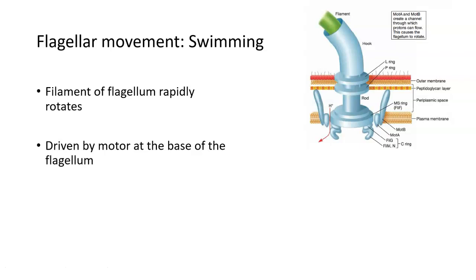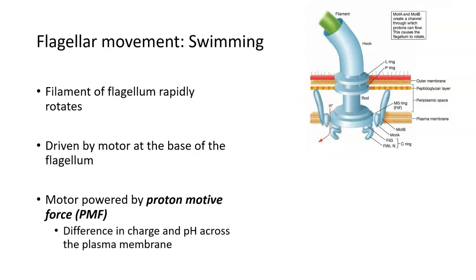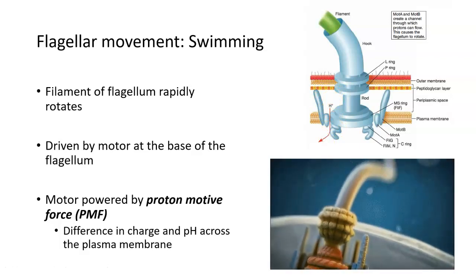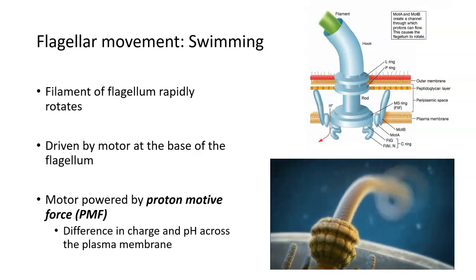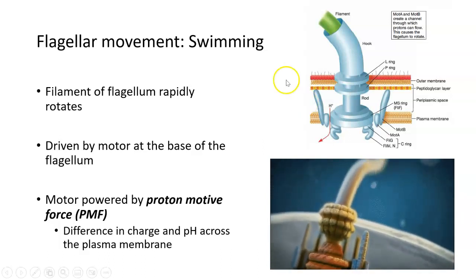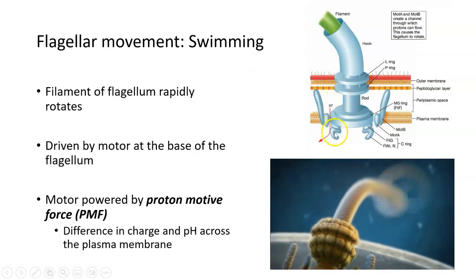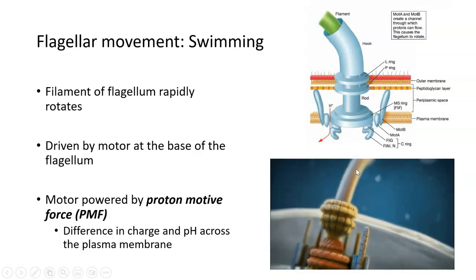Flagella are mainly used for motility or movement. One type of flagellar movement is called swimming, where the filament — the long portion of the flagellum — rapidly rotates or spins in a circle. This is driven by a motor at the base of the flagellum in the basal body, and that motor is powered by the proton motive force. As a proton moves down its concentration gradient from the periplasmic space into the cell, it drives the spinning of the filament — similar to a water wheel — ultimately leading to rotation of the flagella and swimming.